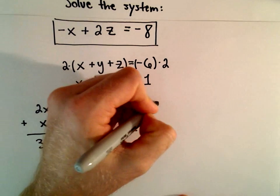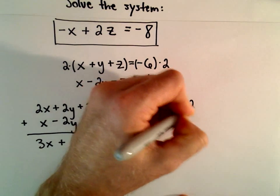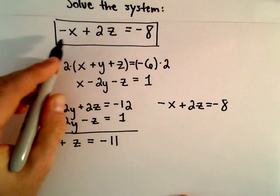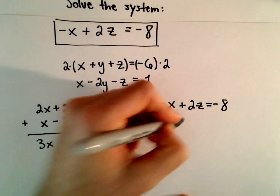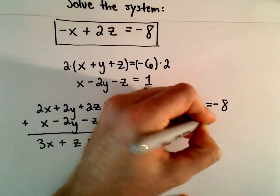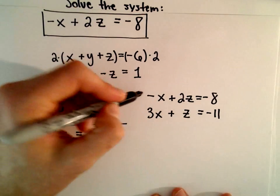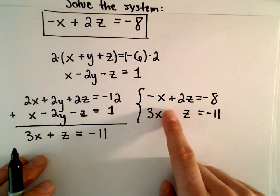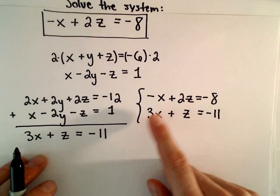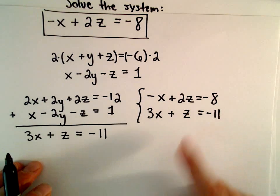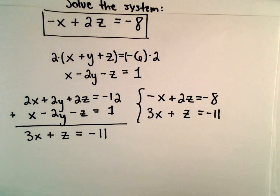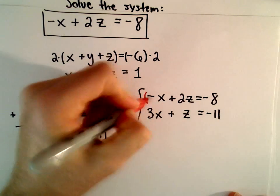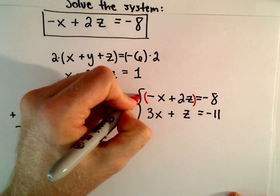Now we've got two equations in x and z: negative x plus two z equals negative eight, and 3x plus z equals negative eleven. My goal is to take this new system and solve for either x or z by eliminating one of them. I'm going to multiply both sides of my first equation here by positive 3.